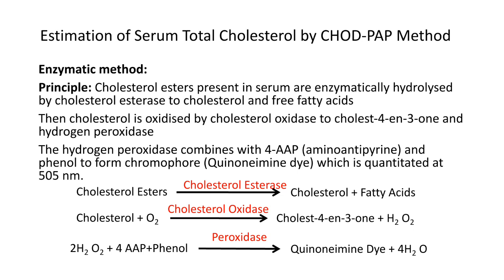So, cholesterol esters are hydrolyzed by the cholesterol esterase enzyme to provide cholesterol and free fatty acids. Then this cholesterol is oxidized by the cholesterol oxidase enzyme to cholesterol-4-EN-3-one and hydrogen peroxide. This hydrogen peroxide is acted upon by peroxidase with 4-aminoantipyrin and phenol to form the quinoneimine dye, which is measured at 505 nanometers. This is the enzymatic method regularly performed in clinical laboratories.